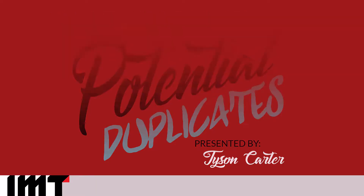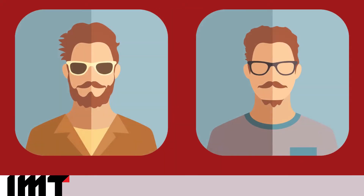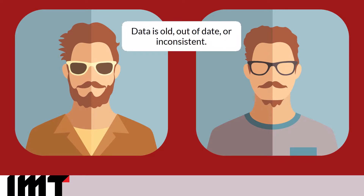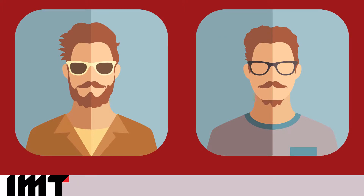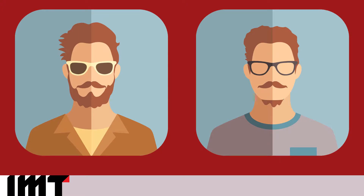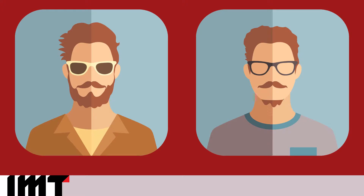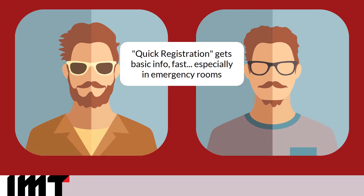Let's talk a little bit about potential duplicates. Lots of organizations find that duplicate records end up getting created. Duplicates can come from different reasons. Sometimes it's been a while since someone visited a hospital, and registration staff didn't realize they were already there. Sometimes people's names change — they've been married or divorced. Other times it's simply an accident, or organizations use a quick registration where a new record is created every time at the emergency room and reconciled later.